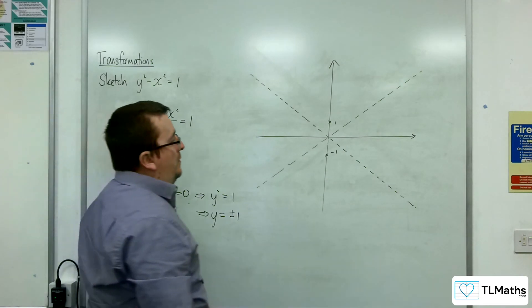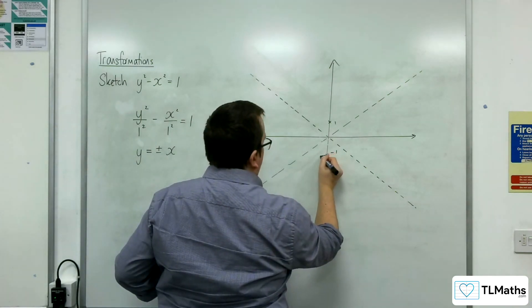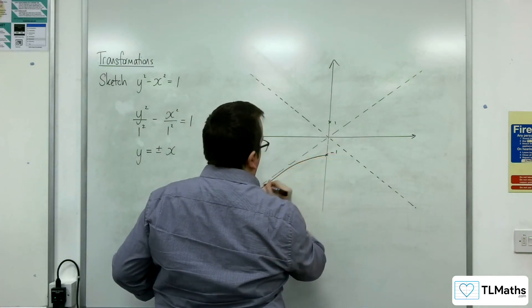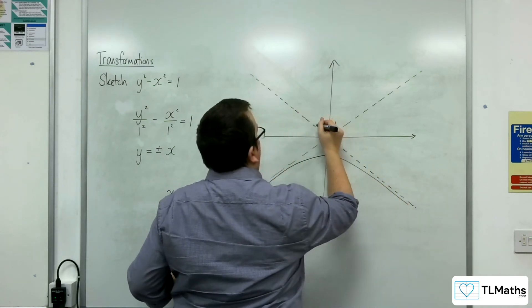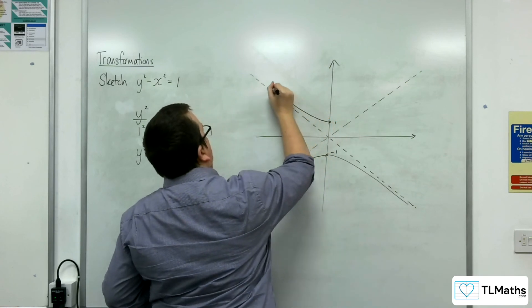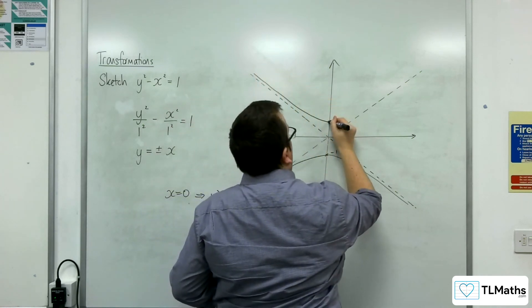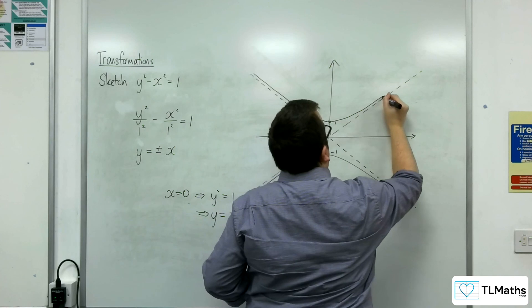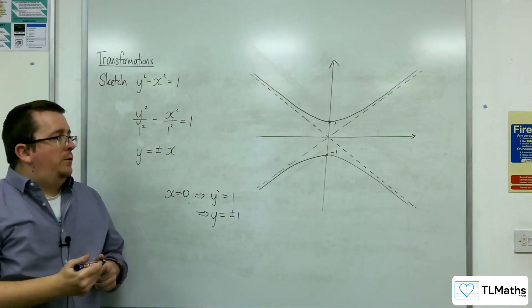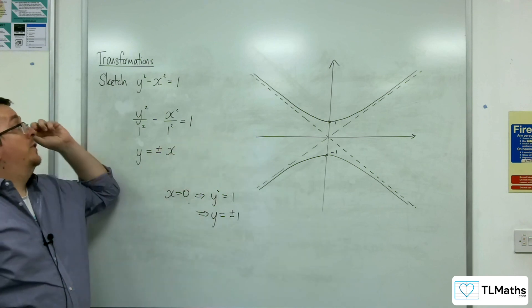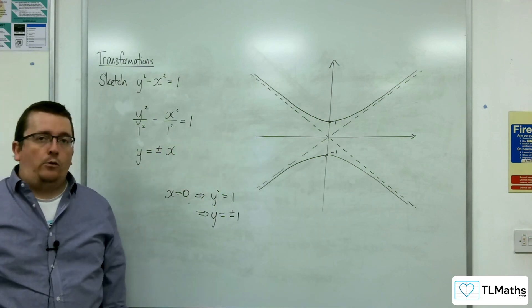And so, the curve must do this. And so, that is a sketch of the curve y squared take away x squared equals 1.